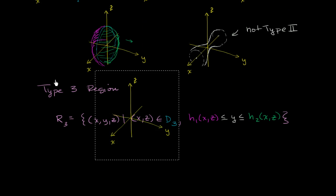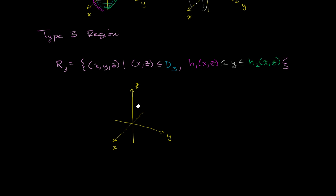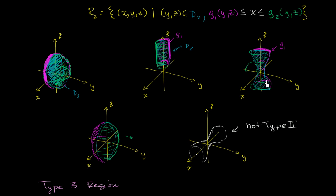Let me draw the axes again. To make the cylinder we've been using, our domain could be a rectangular region in the xz-plane, just like that. Then the lower bound on y could be the side of the cylinder facing in one direction, and the upper bound on y could be the side facing in the other direction. So this is also a type 3 region.